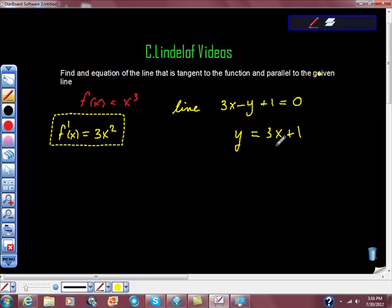So how does that help us? Well, I know that we know that the slope of this line is 3. So what we want to know is when is f prime at x, when is the slope of this function up here equal to 3? So I'm going to say f prime at x is 3. And when is 3 equal to 3x squared?